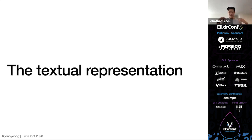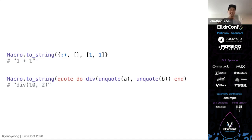Now that we have this idea of quoting, unquoting, and Code.eval_quoted, remember that our pipeline operator macro didn't actually have any of those keywords. We know everything coming in and out is going to be a quoted expression. For larger expressions it gets harder to figure out what's going on. That's where Macro.to_string comes in — it gives us a textual representation of what's happening. We can take a one plus one quote and get back a 'one plus one' string, or take the more complex div(10, 2) quote and get back the div 10 string.